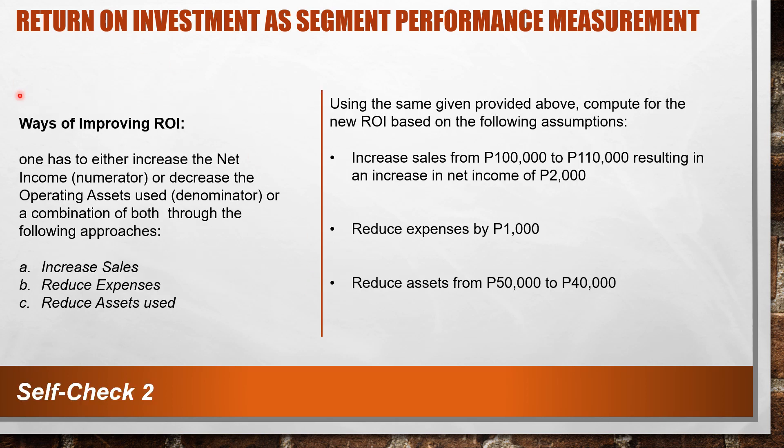Looking at the formula, we can see the ways of improving our ROI. It's either increasing the net income — improving the numerator — or decreasing the operating assets, the denominator, or a combination of both. Specific strategies include increasing sales, reducing expenses, or reducing the assets used.